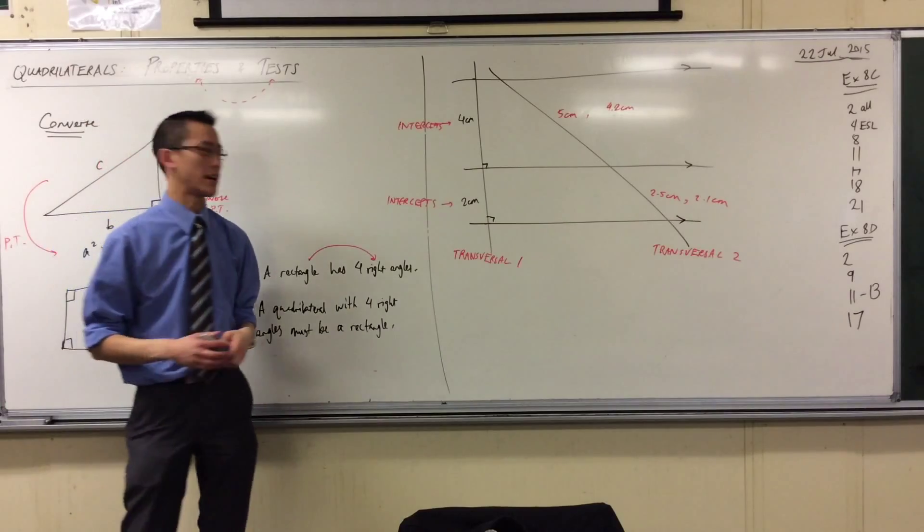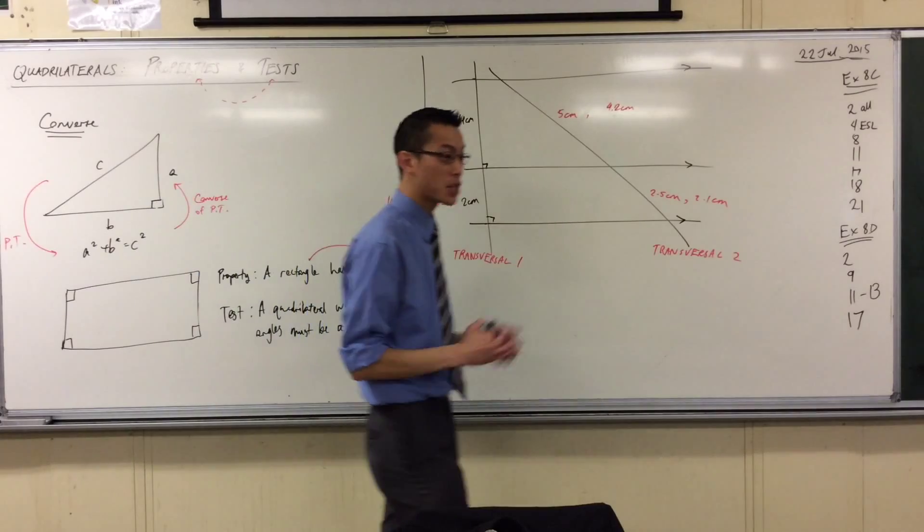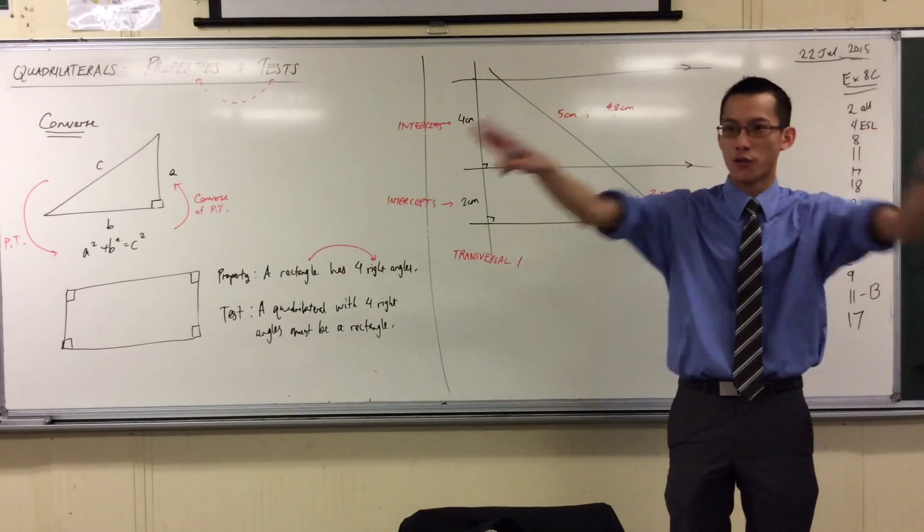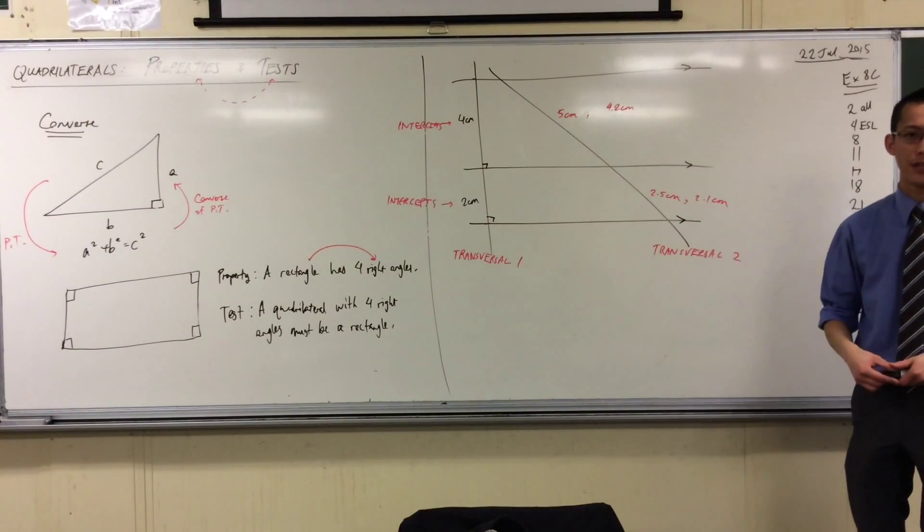What you should see is that every time this intercept up here, no matter how long your intercept is, and everyone's got a different one, this intercept is always twice as long as this intercept. Do you see that? Whatever you've got. And the reason why is because the original intercepts that we drew were also in this ratio.